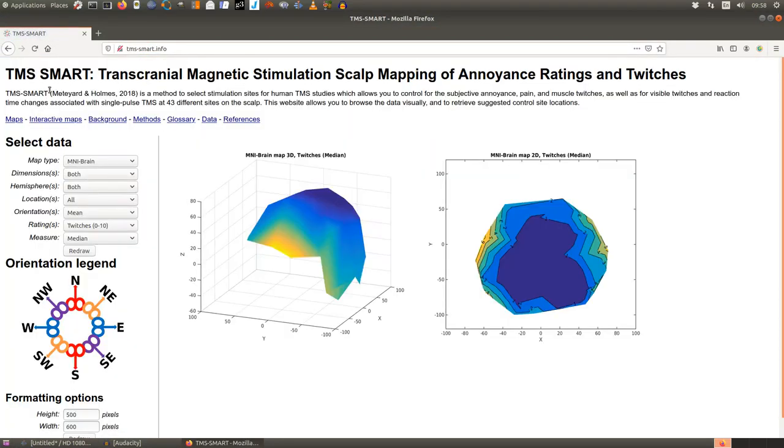It comes from a paper that I wrote with Lottie Metillard in 2018 and this is a method to select locations for control sites for TMS systems. The SMART part is a Scalp Mapping of Annoyance Ratings and Twitches.